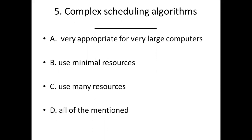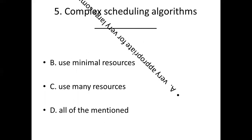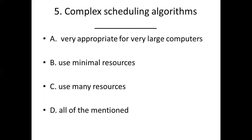Fifth bit. Option C: Use many resources. Option D: All of the mentioned. Answer: Option A, very appropriate for very large computers.